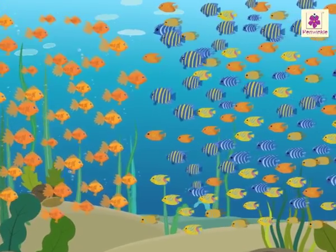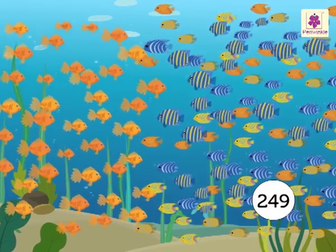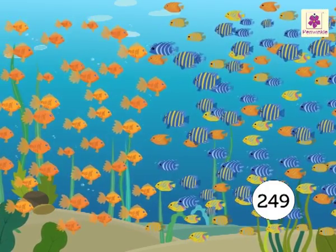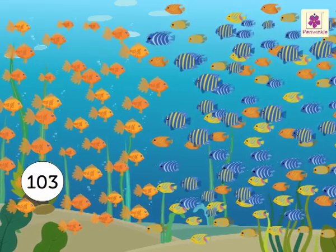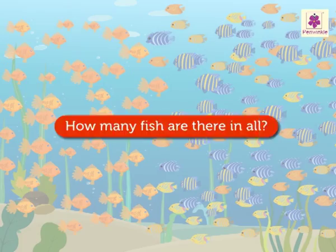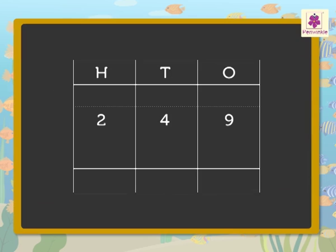Look, there are so many different types of fish. There are 249 angelfish and 103 goldfish. Let us see how many fish are there in all. Here, we have to add 249 and 103 to find out the number of fish.